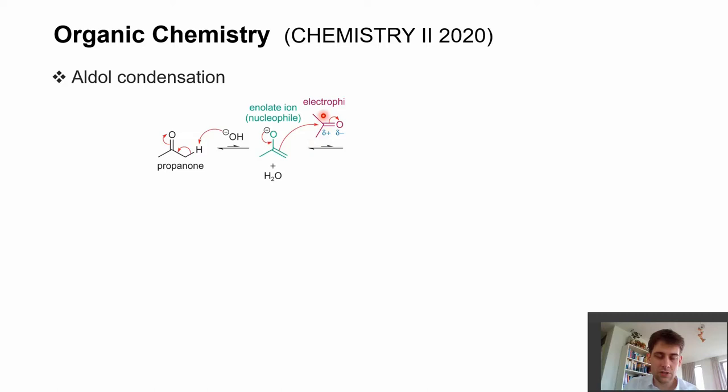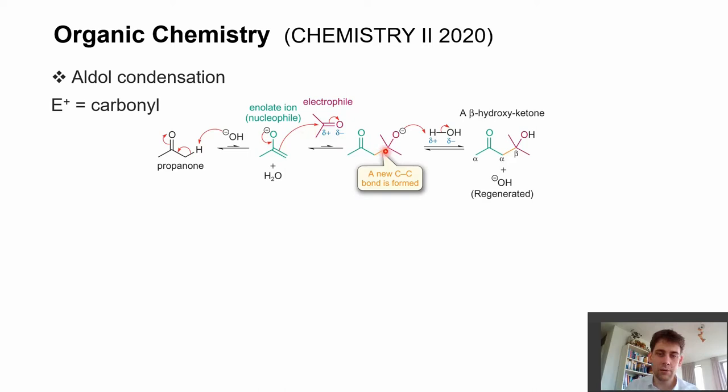So it wants to have electron density, and this enolate ion is a nucleophile, and so they're reacting together. This double bond then attacks the carbonyl carbon atom at another acetone or carbonyl component in general, and we're forming here now a new carbon-carbon bond between two equivalents of acetone.